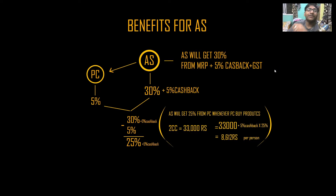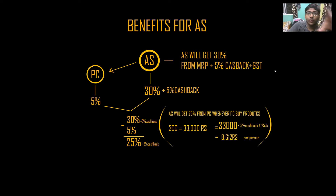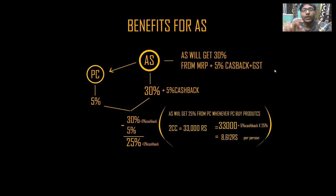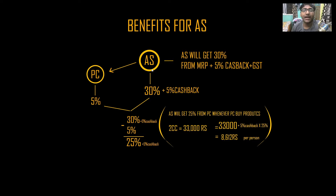Now, what should the AS business be able to get you? Obviously, just like a PC person can refer another person, an AS person can also refer others. I have become AS, and I have six people under me who will buy products. They will also become AS. If I become AS, there will be excitement — we will reach that AS level. So, look at our percentage: AS will get 30% plus 5% cashback on everything.